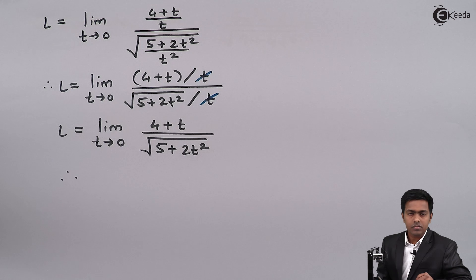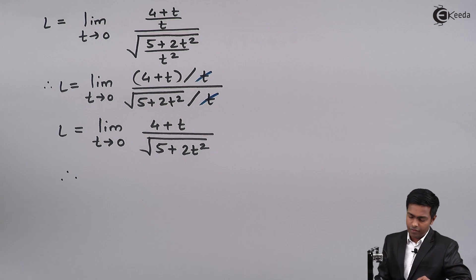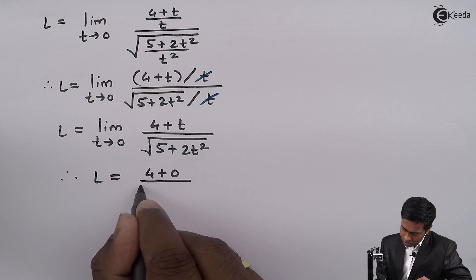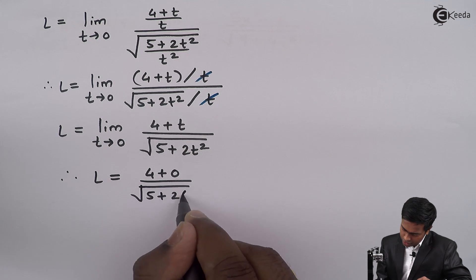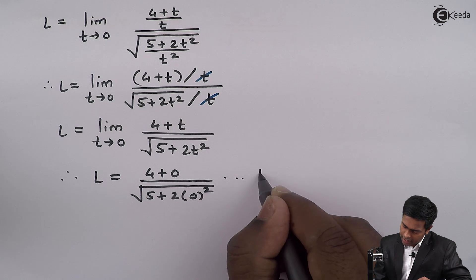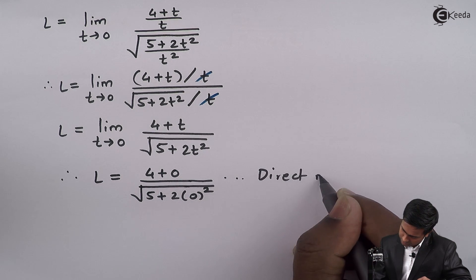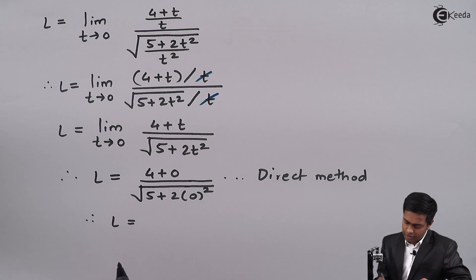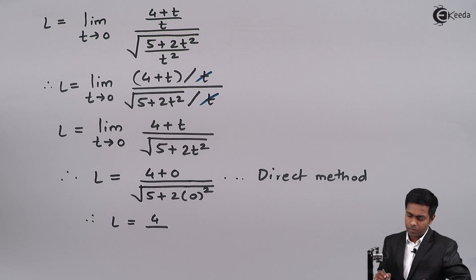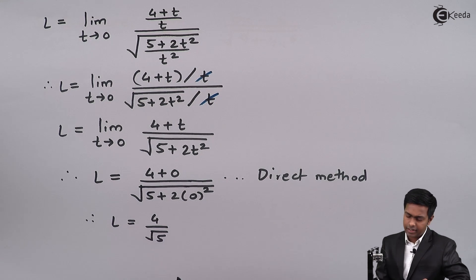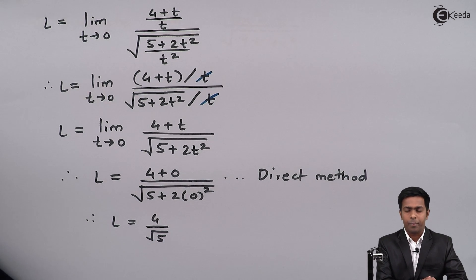By using the direct substitution method, we put t = 0 to get L = (4 + 0) divided by √(5 + 2 × 0²), which gives 4 divided by √5. Hence the answer is 4 upon √5. Thank you!